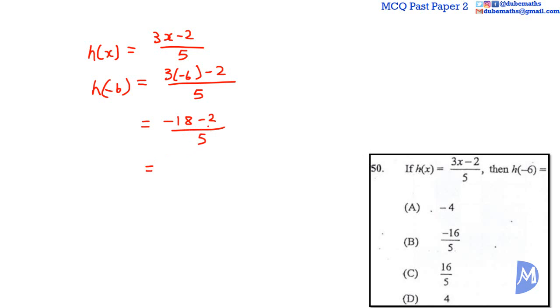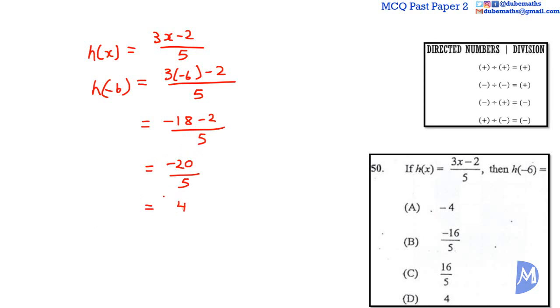Negative 18 minus 2 is negative 20 divided by 5. 20 divided by 5 is 4, and a negative divided by a positive is a negative, negative 4. The answer is A.